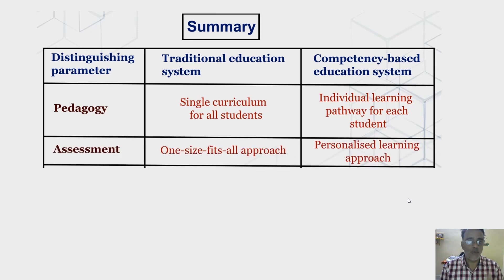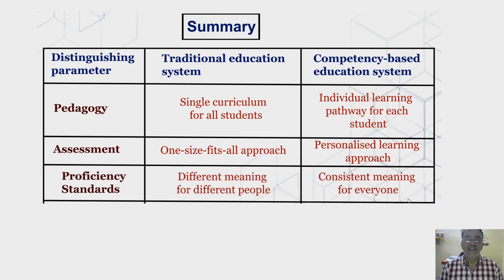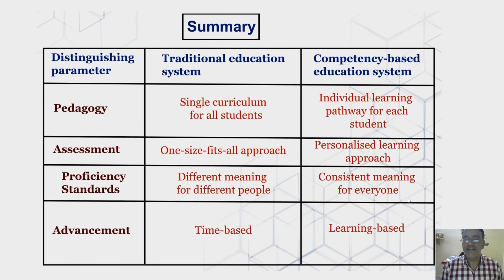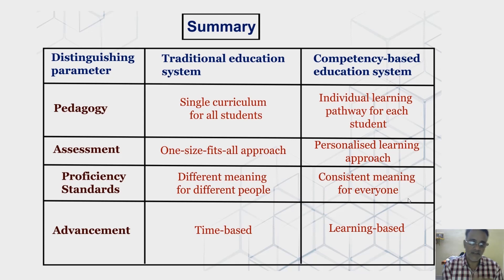Sixth, assessment — a one-size-fits-all approach in the traditional system versus a personalized learning approach in CBE. Seventh, proficiency standards — proficiency has different meanings for different people in the traditional system, whereas in CBE it has a consistent meaning for everyone. Eighth, advancement — time-based in the traditional system, while in competency-based education it is learning-based. These are the eight areas where we have seen the difference between the traditional system and the competency-based education system.